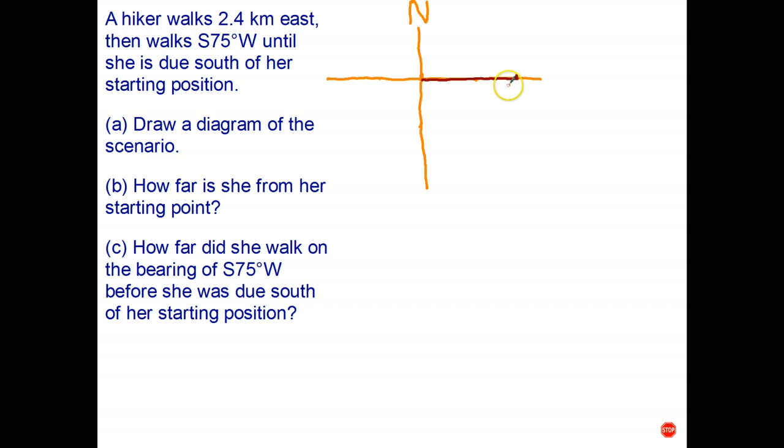From this point she then walks south 75 degrees west. So I'll put in another small compass. She now walks south 75 degrees towards the west, so from the south I'm going to walk in approximately that direction. And I know that this angle in here is 75 degrees. There's her right angle.